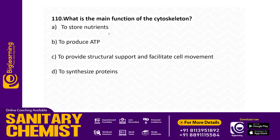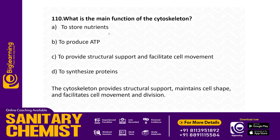What is the main function of the cytoskeleton? Options: to store nutrients; to produce ATP; to provide structural support and facilitate cell movement; to synthesize proteins. Answer: Option C — to provide structural support and facilitate cell movement, maintaining cell shape and aiding in cell division.